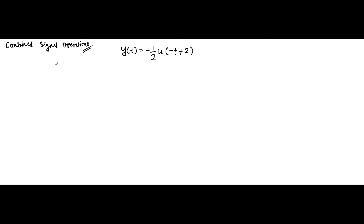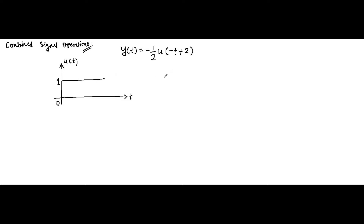First, we know that a unit step signal looks something like this. This is the unit step signal. Now let's identify the individual signal operations involved here.